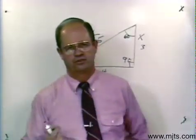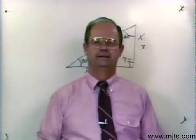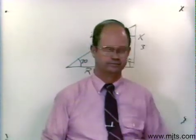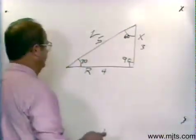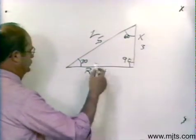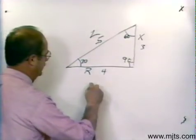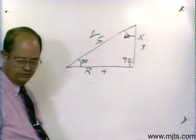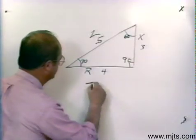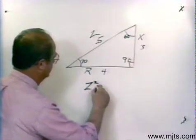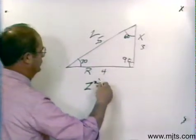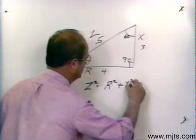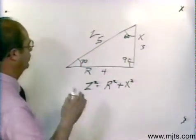Now, there's a formula for a right triangle. And that formula comes from the Pythagorean Theorem. Now, the Pythagorean Theorem states, in other words, this is a formula for a right triangle now, that the hypotenuse squared is equal to the sums of the squares of the other two sides, or R squared plus X squared. Now, that's a formula for a right triangle.